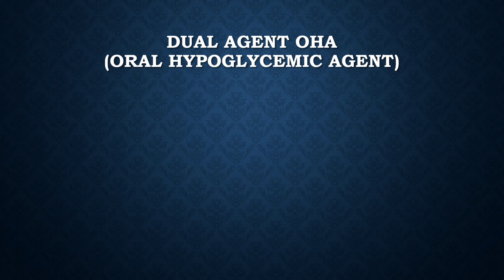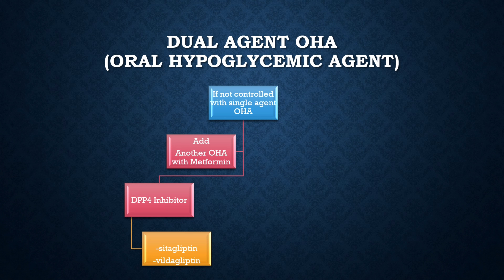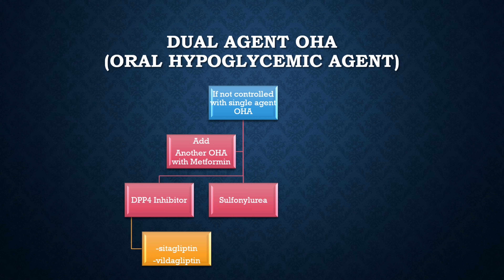If the HbA1c value is between 8.5 to 10, or if the patient's sugar is not controlled with single agent OHA, you should go for dual agent OHA. You add another OHA with tablet metformin. You can add from the DPP-4 inhibitor group, which includes sitagliptin and vildagliptin. You can also use sulfonylurea, which includes glimepiride, gliclazide, glipizide, and other drugs.